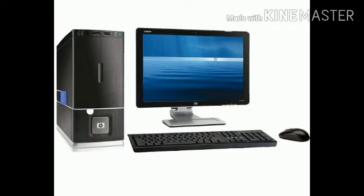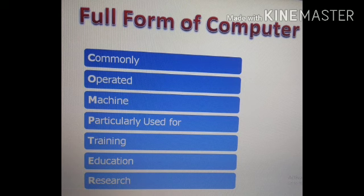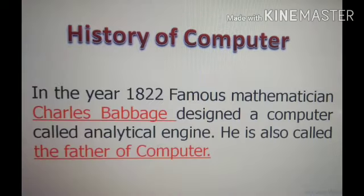Each letter of COMPUTER has a special meaning. C for Commonly, O for Operated, M for Machine, P for Particularly, U for Used for, T for Training, E for Education, and R for Research.